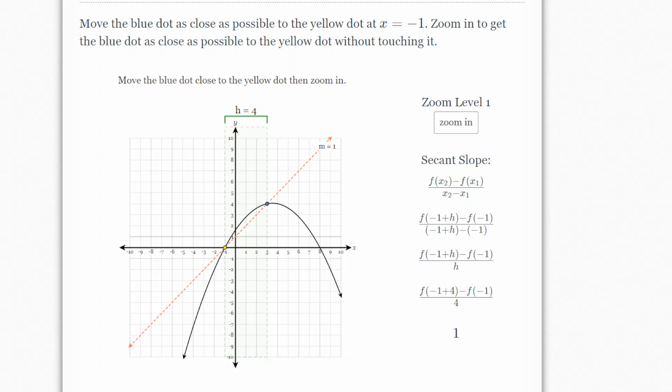This is lesson 15.12, Secant Line Limits Graphically. It says, move the blue dot as close as possible to the yellow dot at x equals negative 1. Zoom in to get the blue dot as close as possible to the yellow dot without touching it.